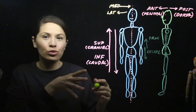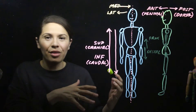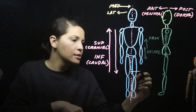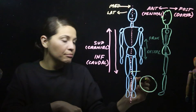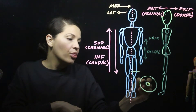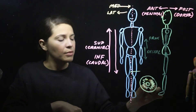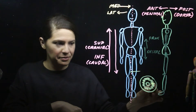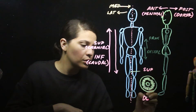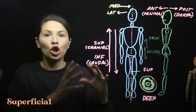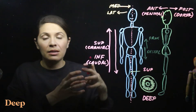Our last directional terms are superficial and deep. To demonstrate this, I'm going to do a cross section through the thigh. In this cross section, the outer circle represents the skin, inside we have the femur bone, and then we have layers of muscle. Superficial refers to things closer to the outside of the body, and deep refers to things further inside the body.